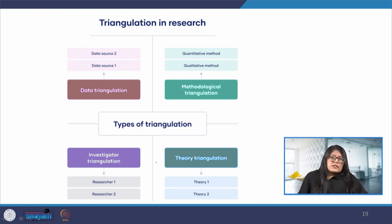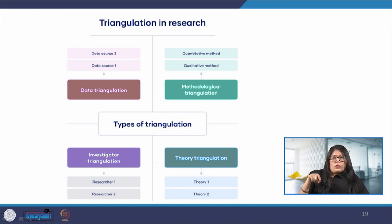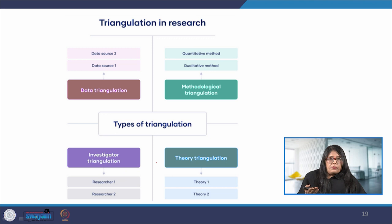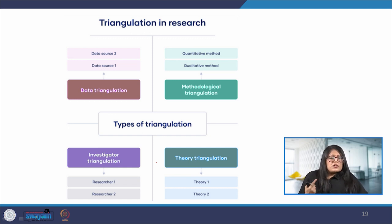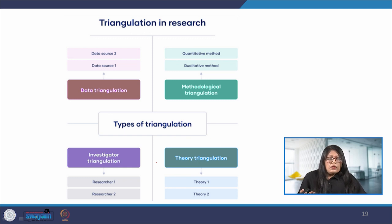In data triangulation, we use multiple data sources to answer our research questions, varying data collection across time, space or different people. For example, to understand the purchasing behavior of elderly people, we can compile and analyze data from a sample of 200 elderly people in Roorkee city over 6 months and repeat this experiment with comparable samples in different regions of the country.